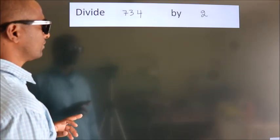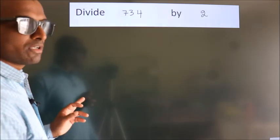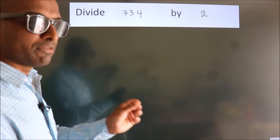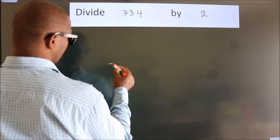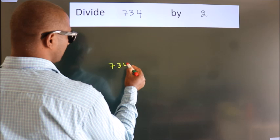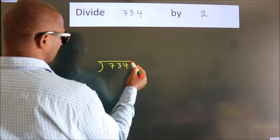Divide 734 by 2. To do this division, we should frame it in this way. 734 here, 2 here.